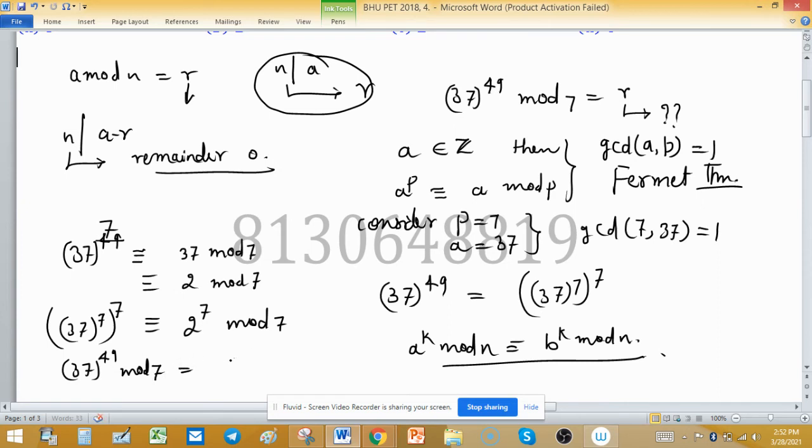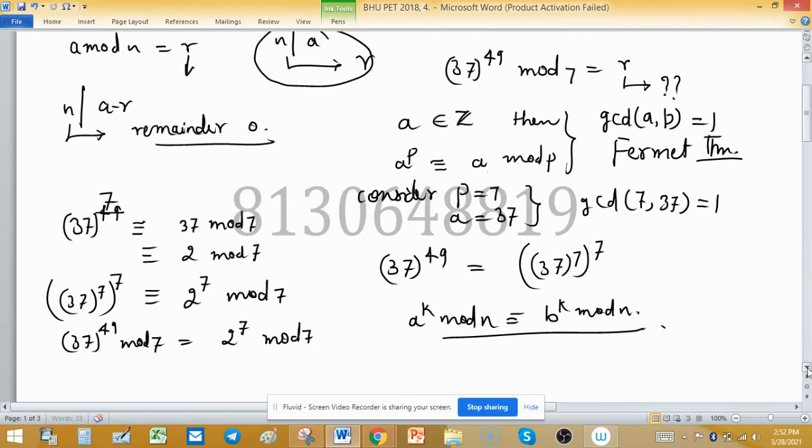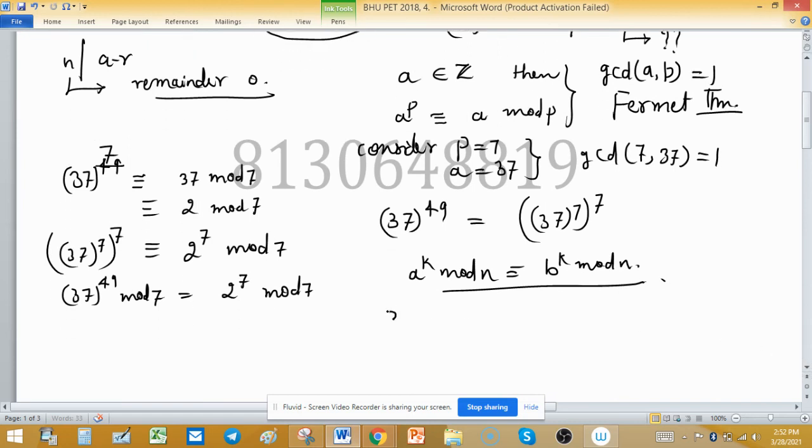This is equal to 2 raised to the power 7 mod 7. Now 2 raised to the power 7: 2 raised to the power 5 is 32, times 4 is 128. Means this is same as 128 mod 7.